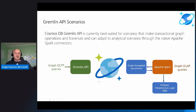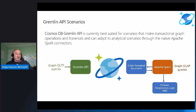Looking at how Gremlin API scenarios fit together: the current Gremlin API is best suited for transactional graph operations and traversals, but can adapt to analytical scenarios through native Apache Spark connectors. In this architecture, Cosmos Gremlin API is in the middle — we can serve Gremlin OLTP queries through regular Gremlin API, but also serve graph OLAP queries through Apache Spark by reading graph documents from Cosmos DB, doing the processing, then either writing data back to Gremlin API — for example creating additional edges based on discovery — or pushing aggregations to a presentation layer like Power BI, since reporting on graph data often becomes tabular format.